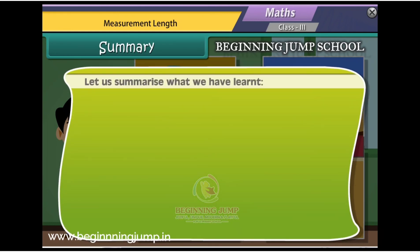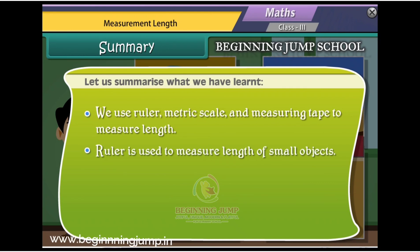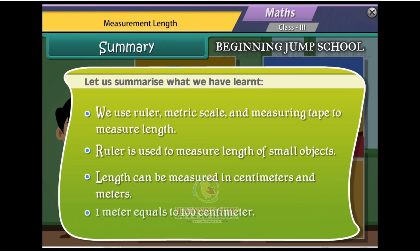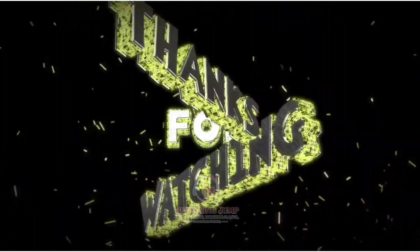Summary: Let us summarize what we have learned. We use ruler, metric scale, and measuring tape to measure length. Ruler is used to measure length of small objects. Length can be measured in centimeters and meters. One meter is equal to 100 centimeters.